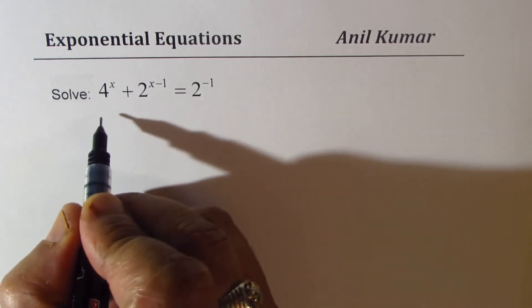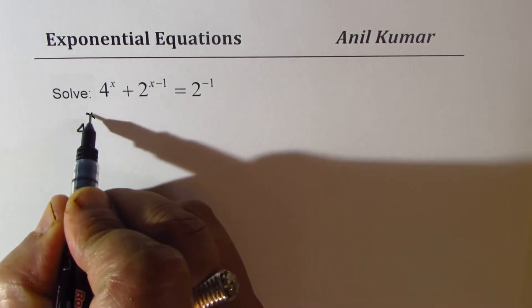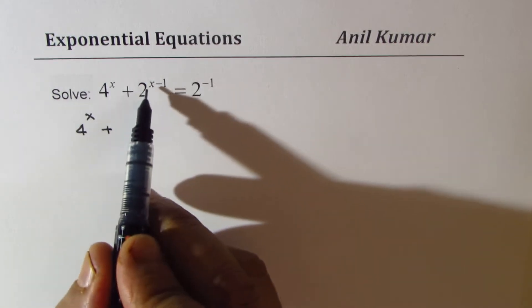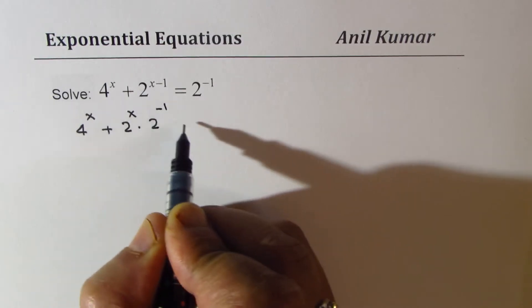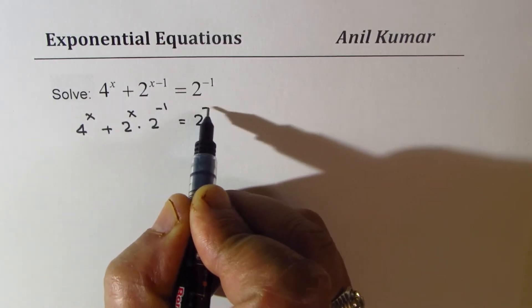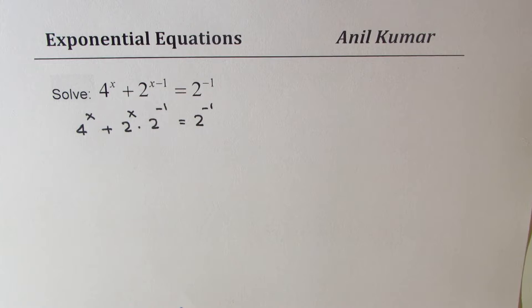So let me rewrite this function. We can write this as 4 to the power of x plus, so that is the product rule, 2 to the power of x times 2 to the power of minus 1 equals 2 to the power of minus 1.